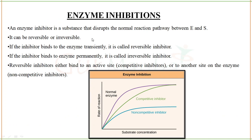Next we are going to talk about enzyme inhibition. The term itself tells you that something is inhibiting the enzyme. An enzyme inhibitor is a substance that disrupts the normal reaction pathway between enzyme and substrate. It can be a reversible inhibitor — binding temporarily — or an irreversible inhibitor — binding permanently. Reversible inhibitors that bind to the active site are called competitive inhibitors; those binding to another site are called non-competitive inhibitors.